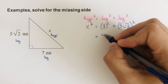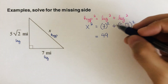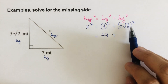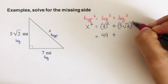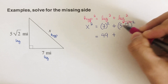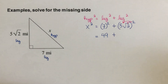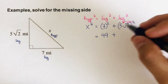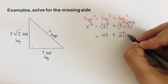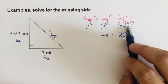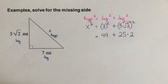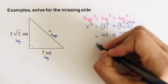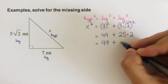Now we simplify. Seven squared is 49. For (5√2)², this is a power of a product, so five will be squared and the square root of two will be squared. Five squared is 25, and then times (√2)² which equals 2, because the square and the square root cancel out. So that gives us 25 times 2, which is 50.